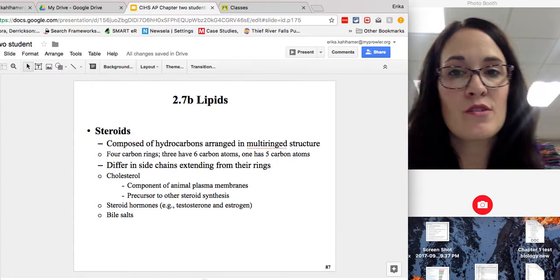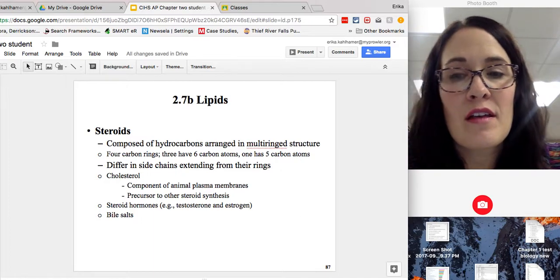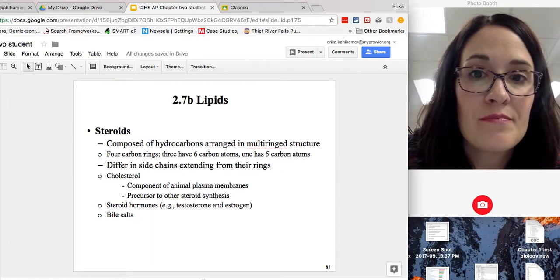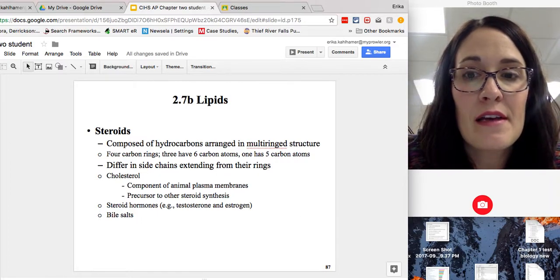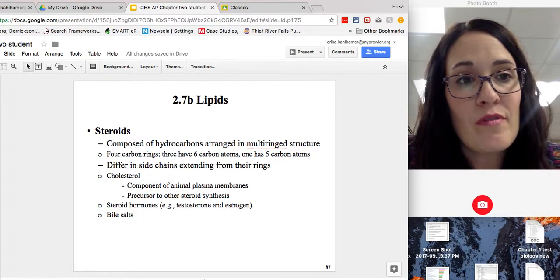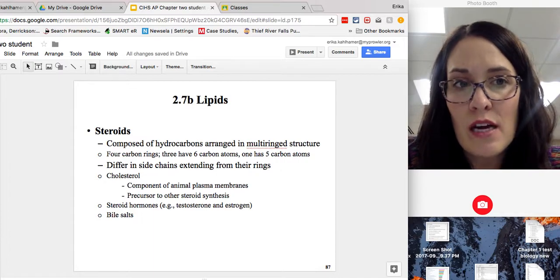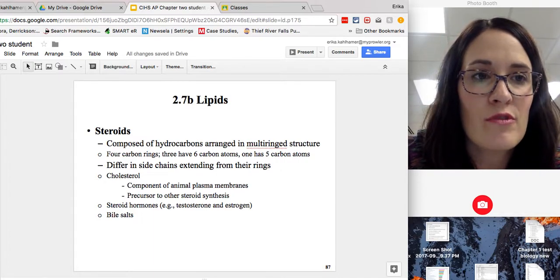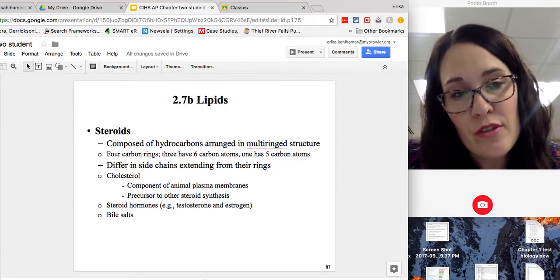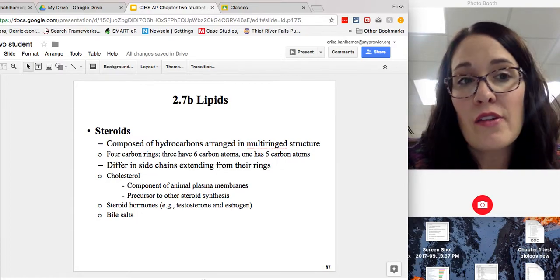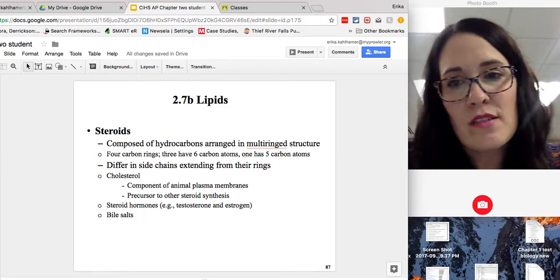Steroids, so it's hydrocarbons, CHs, and except they're arranged in rings. They can be four carbon rings, three, six carbon atoms attached. Some five carbons. There's a variety there. Cholesterol is an example of a very important steroid. When you think of steroids, you think, oh, that's bad. Well, not necessarily. Steroids you need for proper structure of your body. Cholesterol you need for your plasma membranes. Good cholesterol. Another example of steroids that are important are estrogen and testosterone. And then bile salts are a steroid.